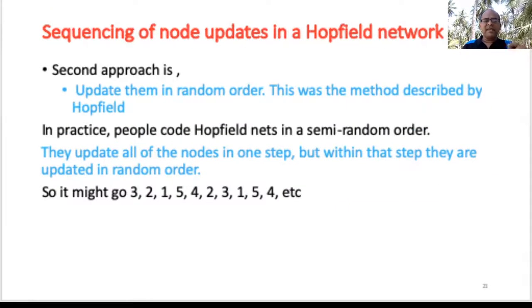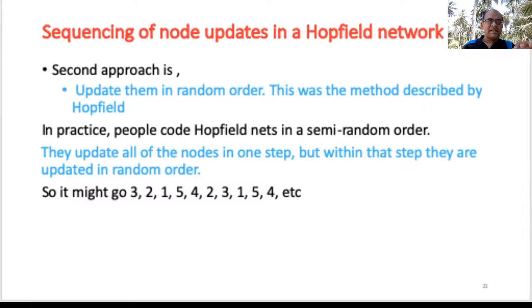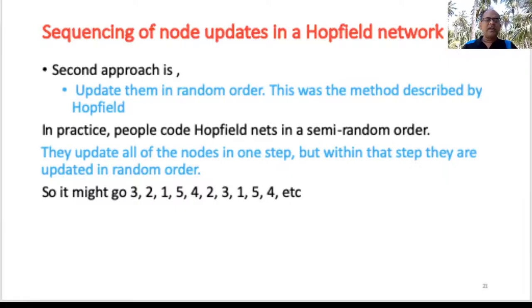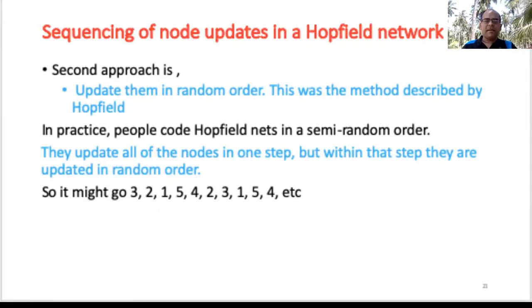The second approach, which is the one adopted and described by the Hopfield network, is to update nodes in a random order. In practice, all nodes are updated in one step, but within that step they are updated in a random sequence — for example 3, 2, 1, 5, 4 — and that is how it works in real time.